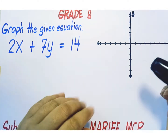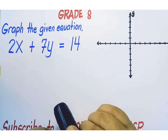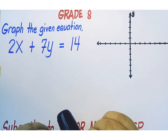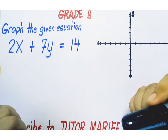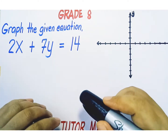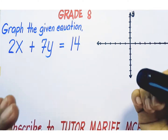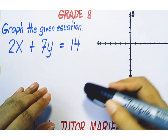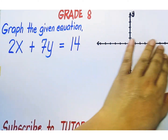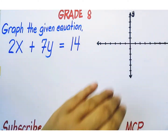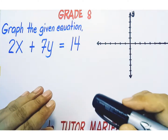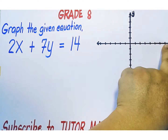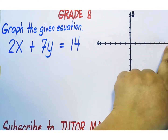Let's define x-intercept. The x-intercept of a line is the point where the line crosses the x-axis. Remember that any point on the x-axis always has the y-coordinate equal to zero.